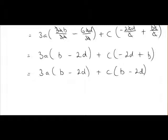So like we did before, we can rewrite this, we can see with a common term, we're multiplying 3a by b minus 2d, and we're also multiplying c by b minus 2d. So we can rewrite this as 3a plus c by the common factor, which is b minus 2d. And that's it completely factorized.